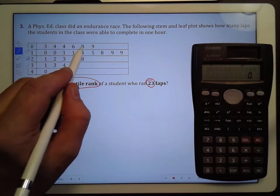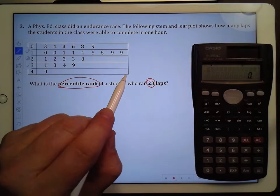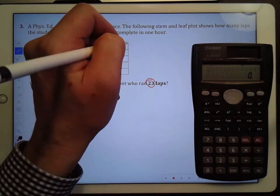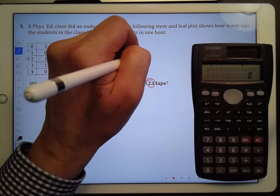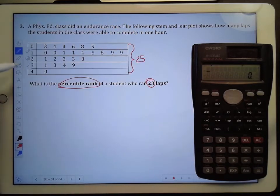And when you count them, you're going to see one, two, three, four, five, six in the first row and when you count them all up you'll see that there are 25 values in total there in that stem and leaf plot.